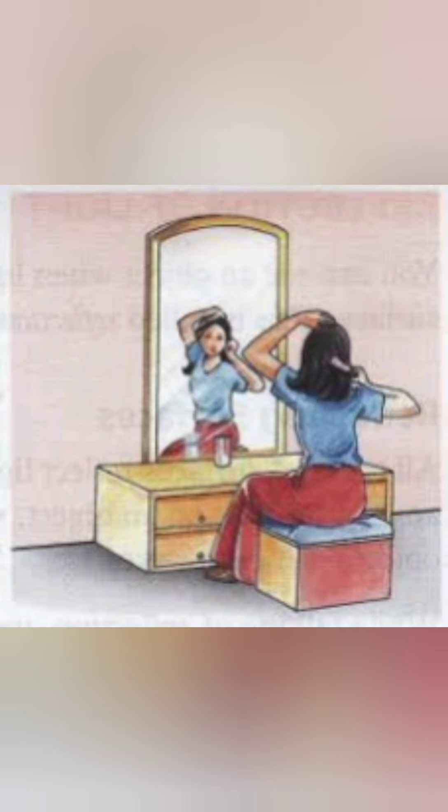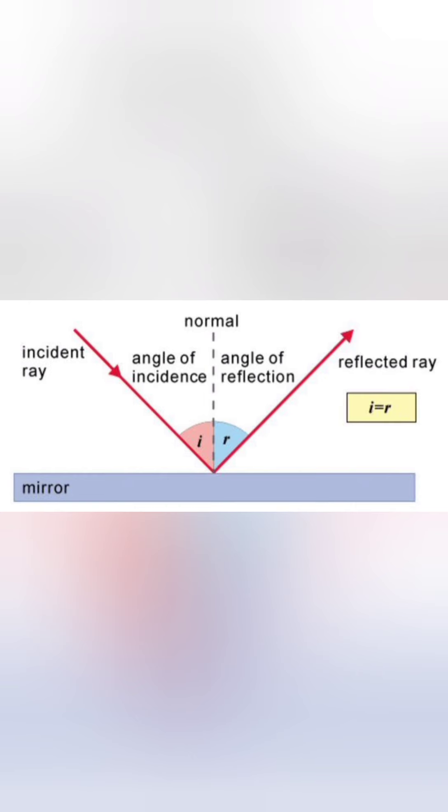The light incident on a plain mirror enters from the front side of the polished surface and is reflected from the silvered surface. The coating being opaque does not allow light to pass through it. Now let us learn some terms related to reflection of light.